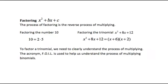Factoring trinomials in the form x squared plus bx plus c. The process of factoring is the reverse process of multiplying. For example, factoring the number 10 means we're going to take 10 and write it as a product of factors. We know that 10 is equal to 2 times 5, and so 2 times 5 is the factored form of 10.